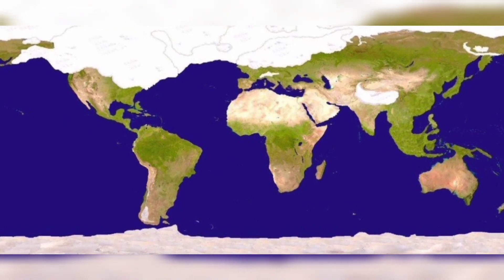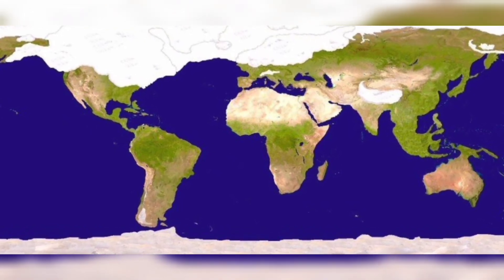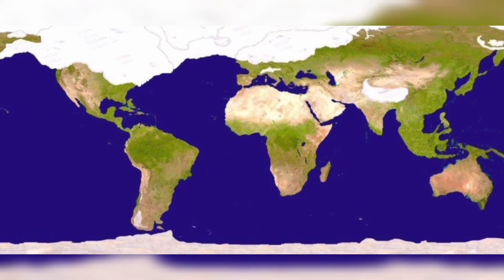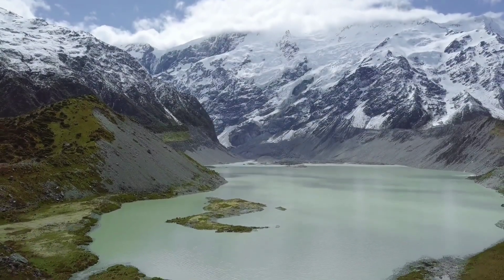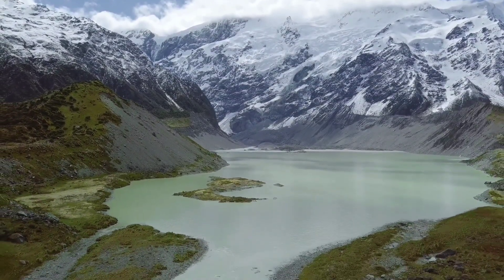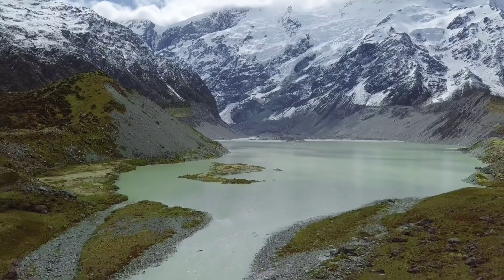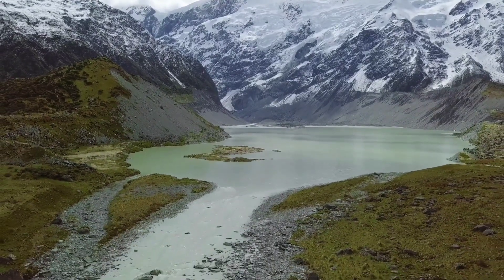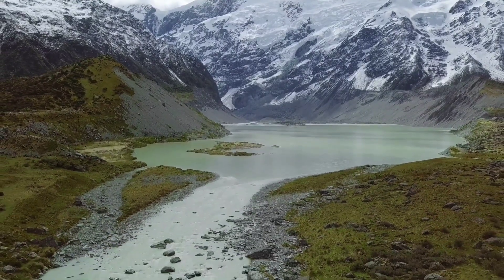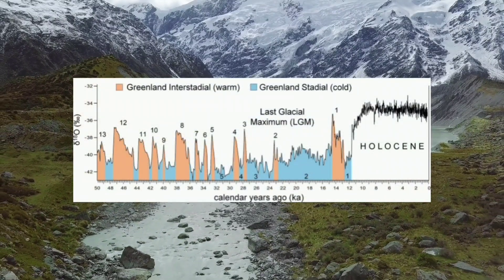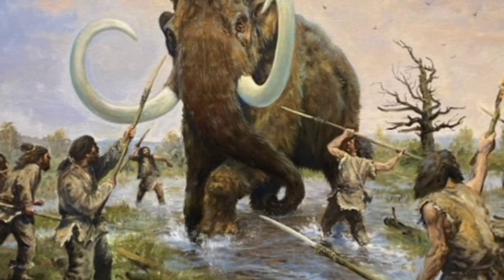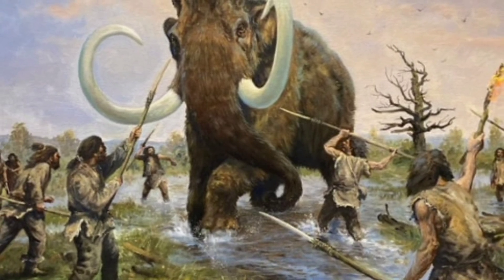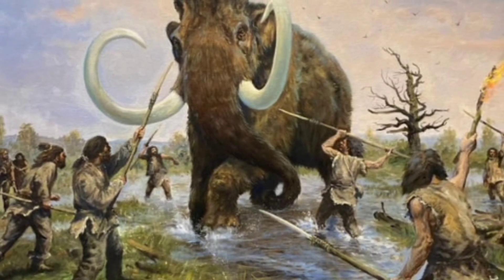As the Pleistocene Epoch drew to a close, the Earth experienced significant climatic shifts. The last glacial maximum, around 20,000 years ago, marked the peak of the most recent glacial period. Following this, the Earth's climate began to warm due to changes in Milankovitch cycles, leading to the retreat of ice sheets and the onset of the Holocene Epoch. Concurrently, the arrival of anatomically modern humans played a critical role in the extinction of many large megafauna species through overhunting and habitat disruption.